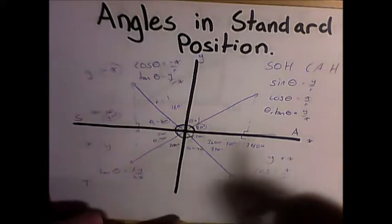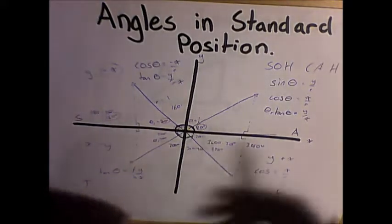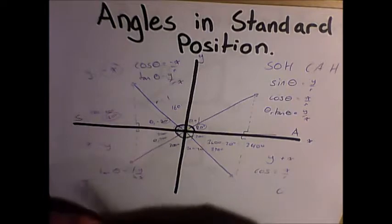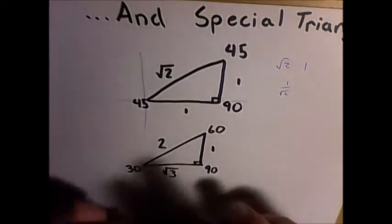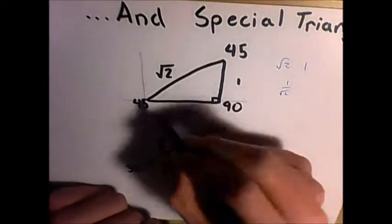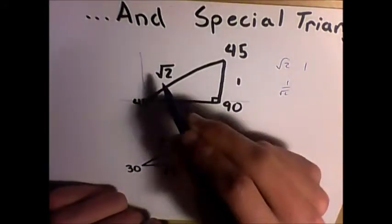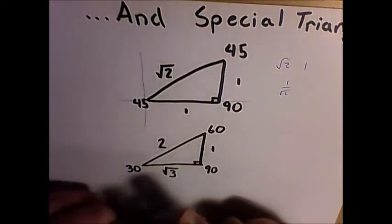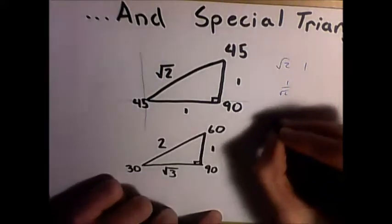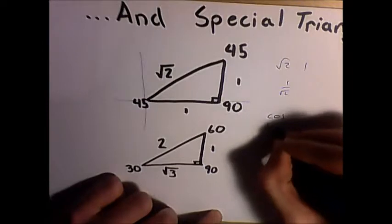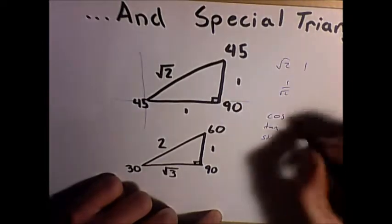And this is helpful to remember when we have to find exact values, and we can use what's called special triangles to find these exact values. Now, special triangles are basically triangles that have set angles and a set ratio of side lengths. And we can use these side lengths to find exact values for cos, tan, and sine ratios.